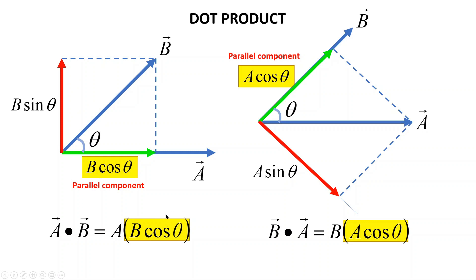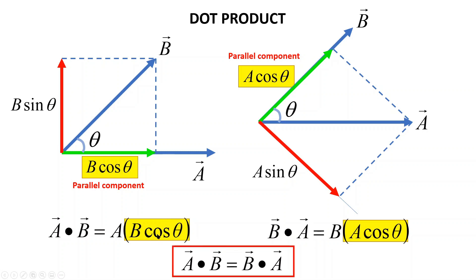We can conclude that dot product fulfills the commutative law, which states that a dot b is equal to b dot a.